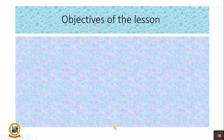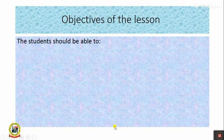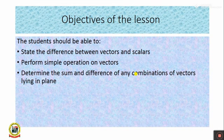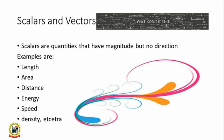Under Scalars and Vectors, we are expected to learn the following: one, state the difference between vectors and scalars; two, perform simple operations of vectors; three, determine the sum and differences of any combination of vectors in line and plane; four, resolve a vector into a single direction. Without wasting much of our time, let's start with scalars.